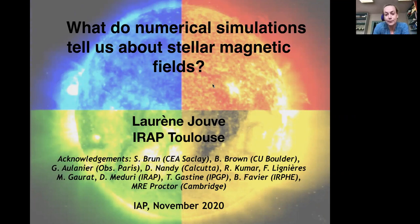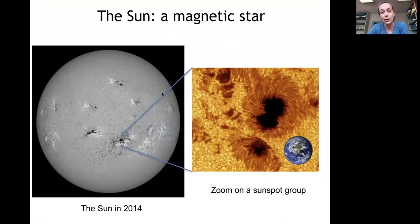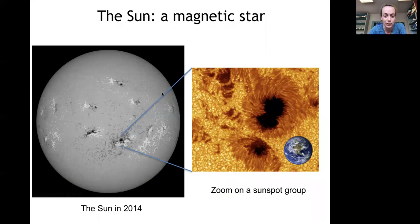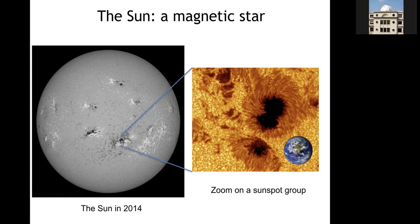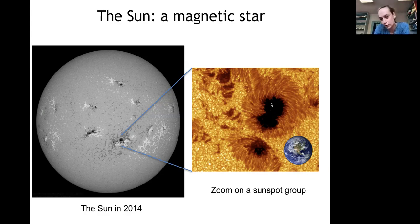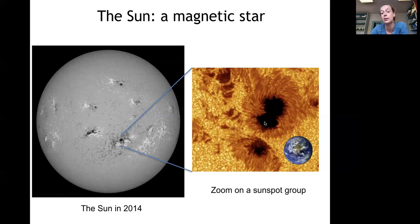Let's start with the main magnetic star we know: the sun. This is the star we know best because we can actually resolve its surface and see the main manifestation of the magnetic field, which is sunspots. These sunspots are large features at the surface of the sun, typically the size of the earth, and which are a little bit darker than their surroundings because there is a strong magnetic field which prevents an efficient transport of heat at this particular location.